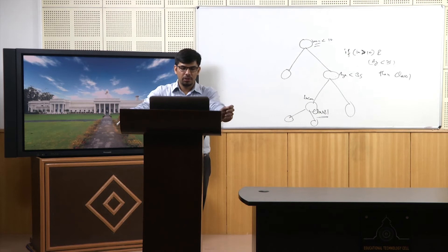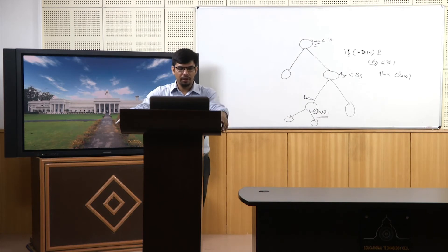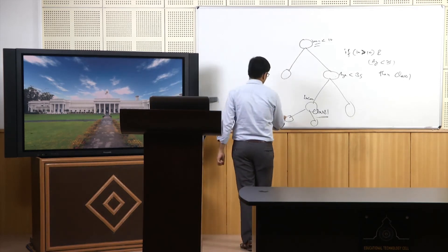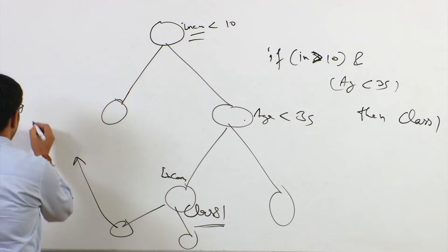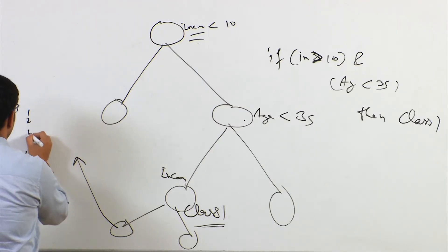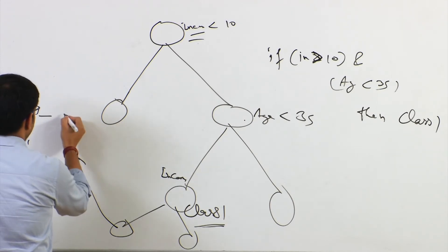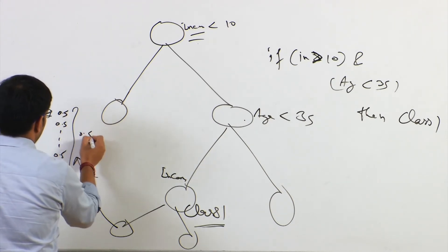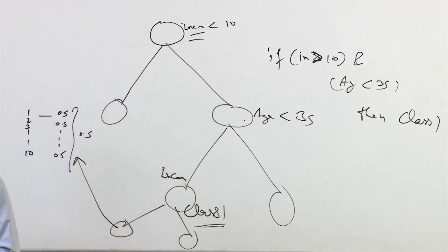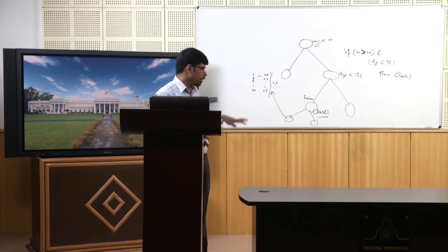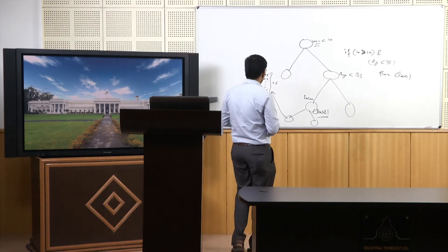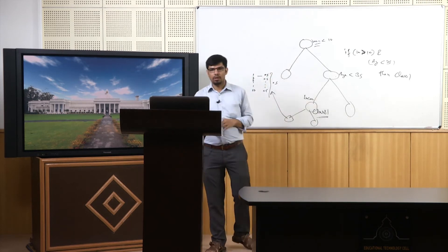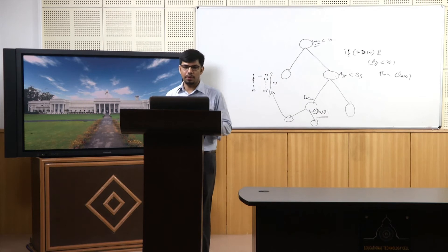The lowest impurity is 0, and this occurs when all observations in a leaf node have the same actual value of the outcome variable. For example, if 10 observations all have value 0.5, the mean is 0.5 and the deviation becomes 0. So lowest impurity is achieved when all observations in a leaf node have the same actual value.